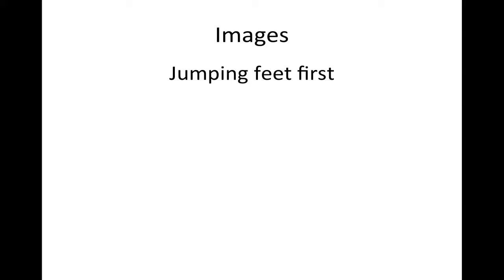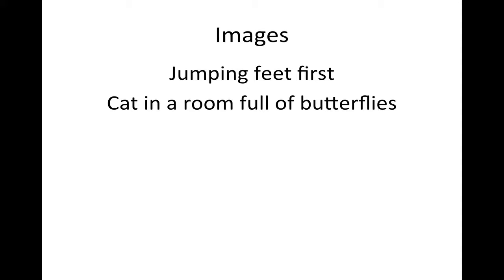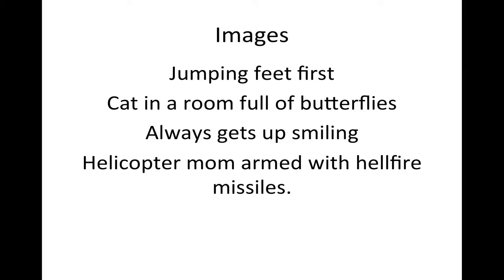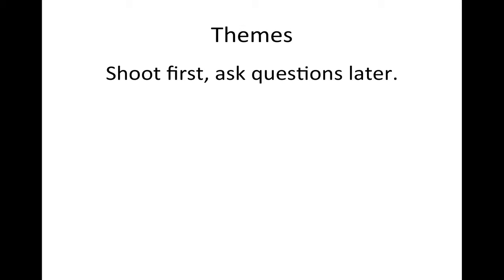Images are another important way to create spines. Somebody who jumps in feet first is a good image. A cat in a room full of butterflies — a friend once described a woman that way to warn me she was easily distracted and unreliable, and I immediately understood not to count on her. Somebody who gets knocked down and always gets up smiling is a strong image. A helicopter mom armed with Hellfire missiles is another vivid one.